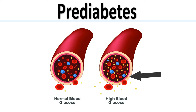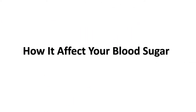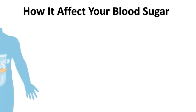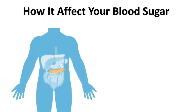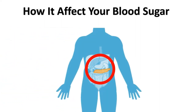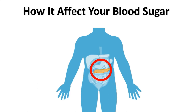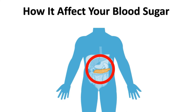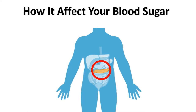Now let's look at how diabetes affects the blood sugar. Normally, your pancreas makes insulin, and insulin is needed for glucose to move into the body's cells for energy. When you have diabetes, your pancreas makes little or no insulin, or your body's cells don't respond to the insulin that's made.